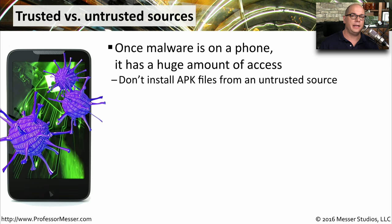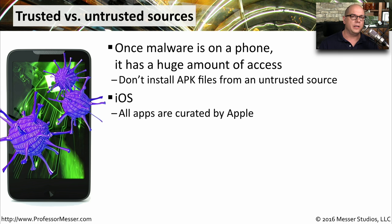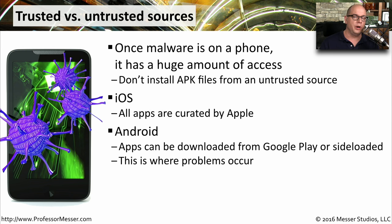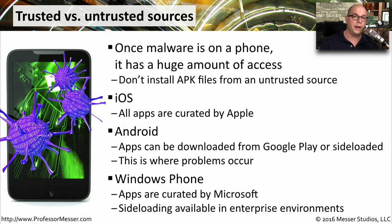Once malware gets onto a mobile device, it can cause a lot of problems and may even access a certain amount of data. For that reason, you need to know which sources are trusted for installing an application and which may be untrusted. With Apple's iOS, all applications are installed directly from the App Store, so Apple is able to curate them and ensure they're both usable and secure. With Android, you can install from Google Play, which is relatively trusted, or from third-party sites, where untrusted applications may get installed. If you're running Windows Phone, applications are curated by Microsoft, which is a trusted source. In an enterprise, you may have the option to sideload some applications, but since those come from your own environment, those can also be trusted.